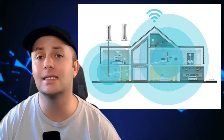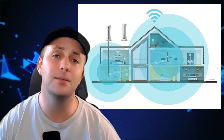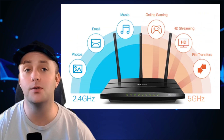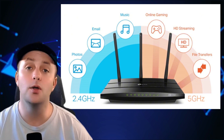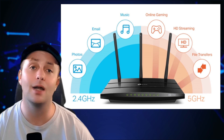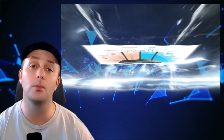Mesh Wi-Fi systems are particularly effective in eliminating dead zones and ensuring strong coverage throughout your home or office. These systems consist of multiple access points that work together to create a single, seamless network. Let's also touch on channel selection. Wi-Fi networks operate on different channels within the 2.4 GHz and 5 GHz bands. In crowded areas, multiple networks might be using the same channel, causing interference and slowing down your connection. You can use tools like Wi-Fi analyzers to check which channels are less congested and manually set your router to use those channels for better performance.